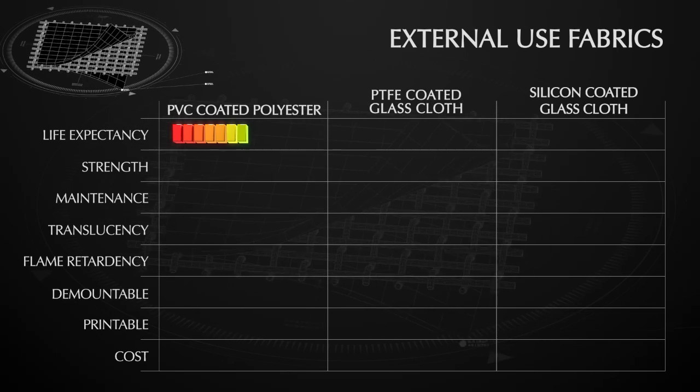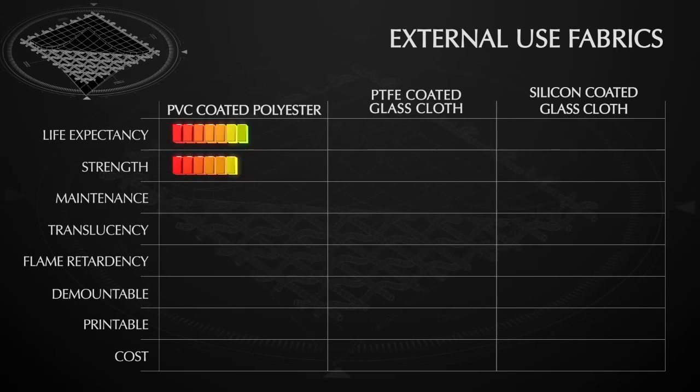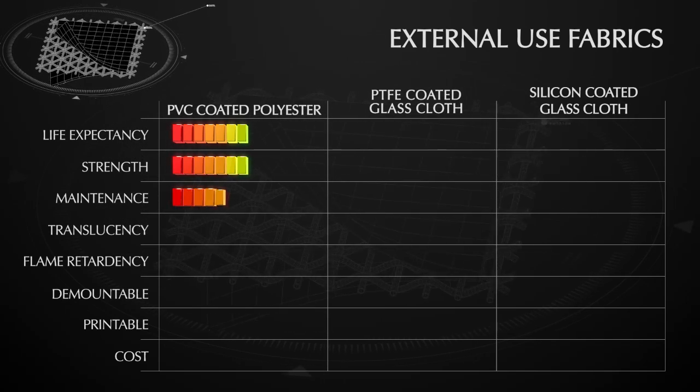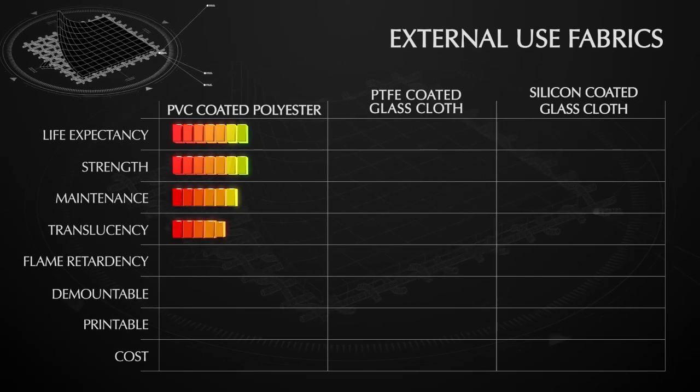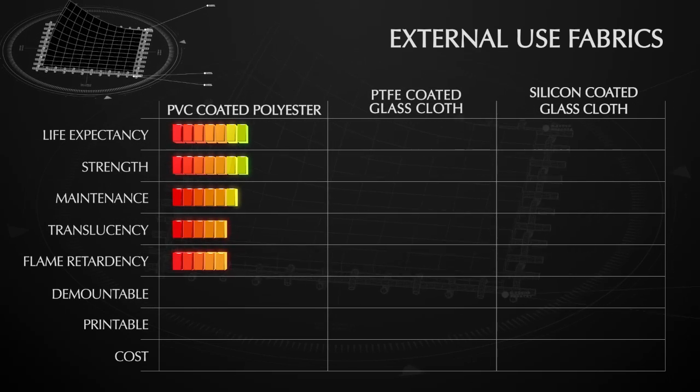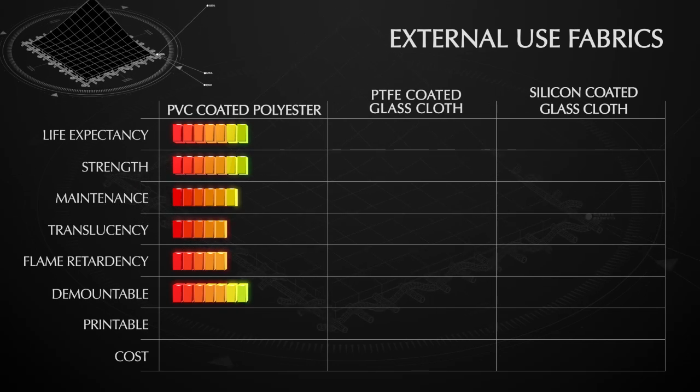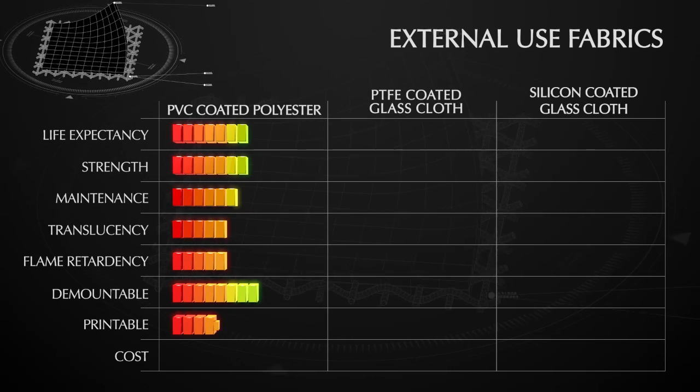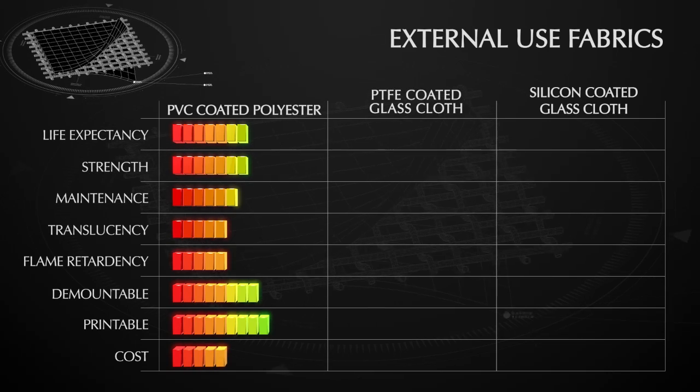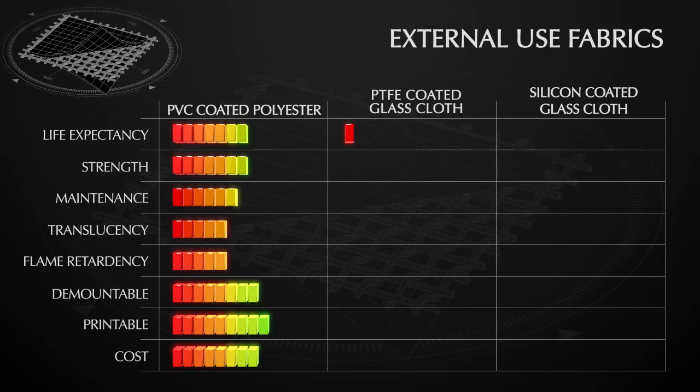PVC coated polyester scores well when measured in terms of its strength. It is easy to dismantle and print on, is relatively cost effective and requires moderate maintenance. However, it doesn't last as long and has a lower light transmission than other available fabrics.